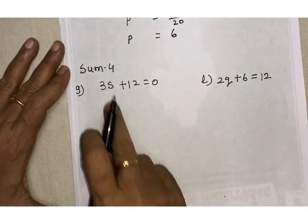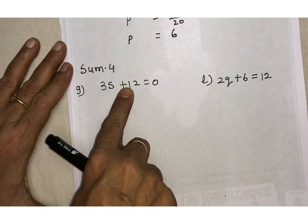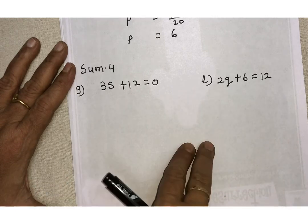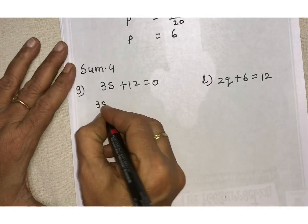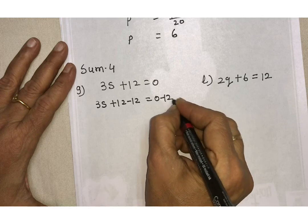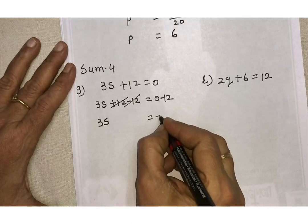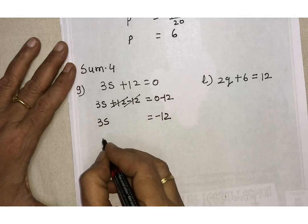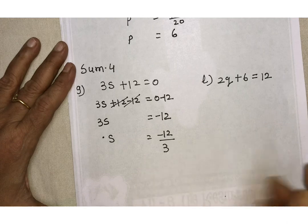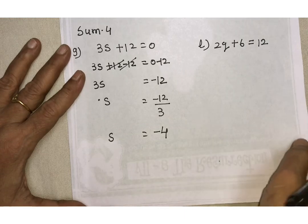The next sum is 3S plus 12 equals 0. Since 12 is in addition form, we subtract 12 from both sides. So 3S plus 12 minus 12 equals 0 minus 12. The 12s cancel, leaving 3S equals minus 12. Dividing by 3, S equals minus 12 upon 3, which gives S equals minus 4.